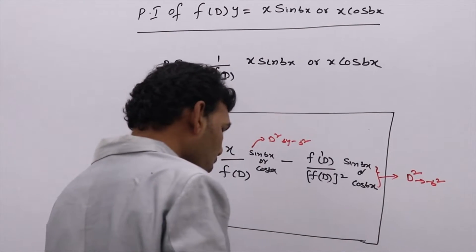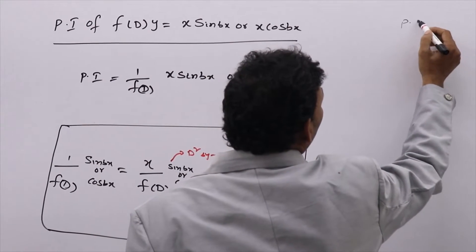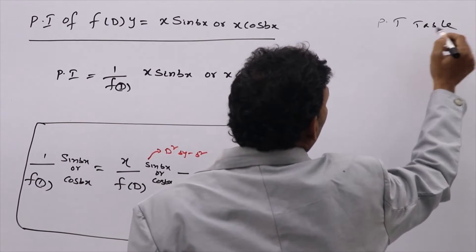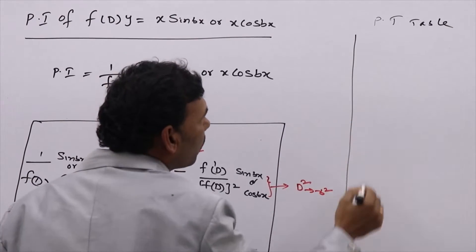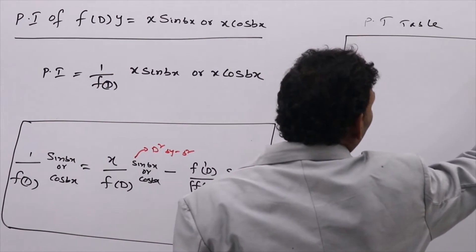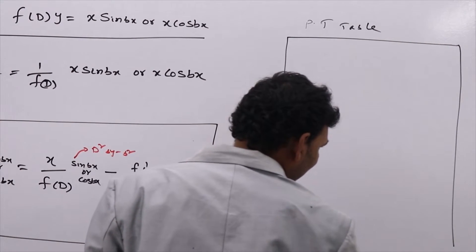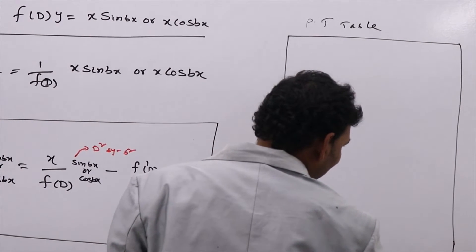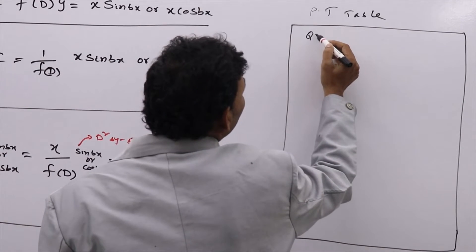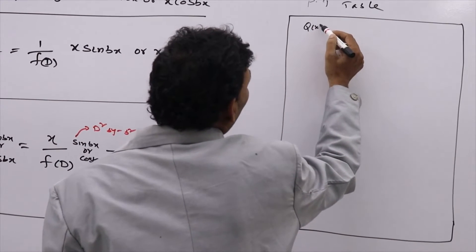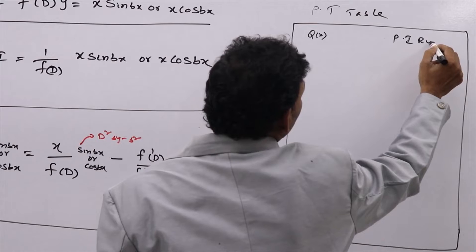These are the rules you need to remember — this is called the PI table. I am giving an overview of all particular integrals, all PIs, all particular integrals that we are going to discuss now. How many particular integrals are there?